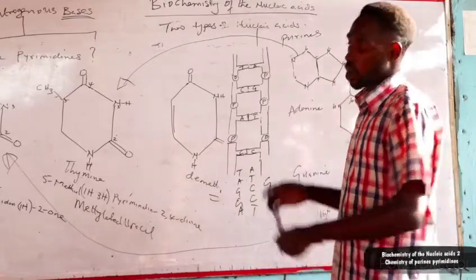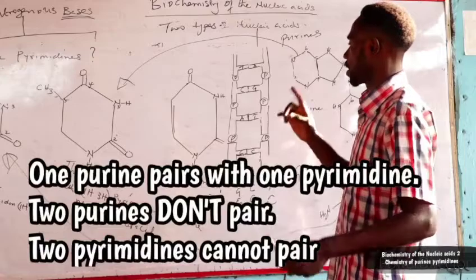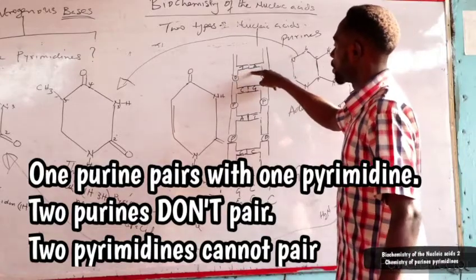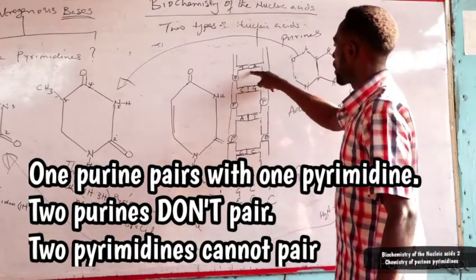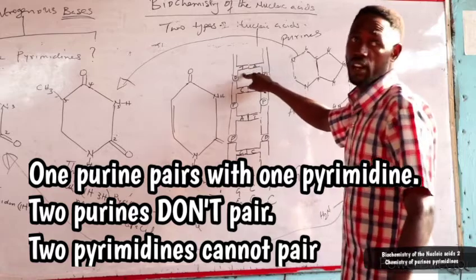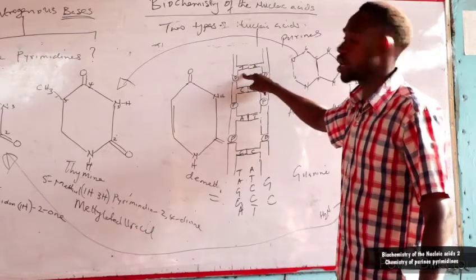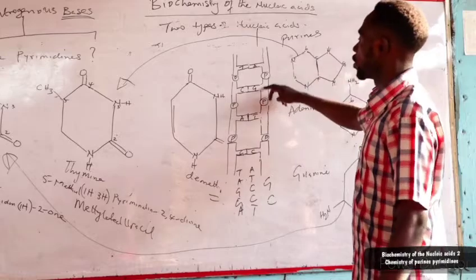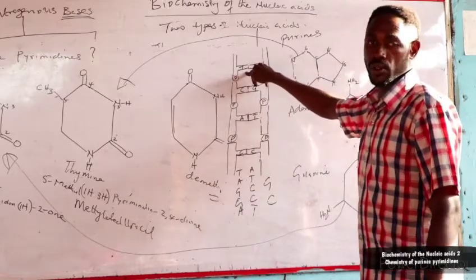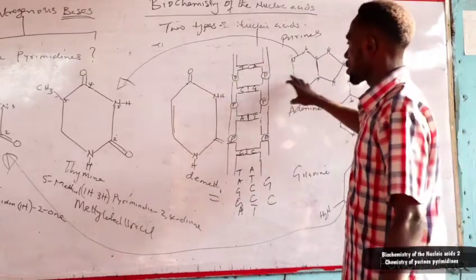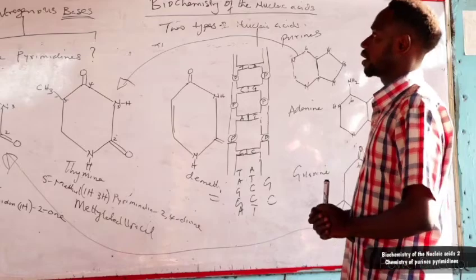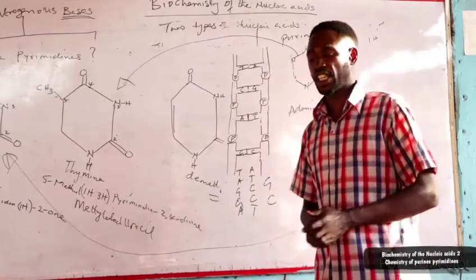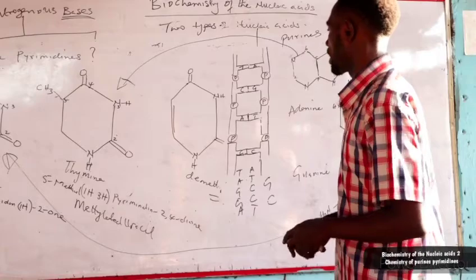One purine pairs with one pyrimidine. So it is wrong to write two pyrimidines or two purines together. Guanine cannot pair with adenine because those are two purines. And guanine does not pair with thymine. That is the rule for base pairing in the nitrogenous bases, which form the interior of the nucleic acid.